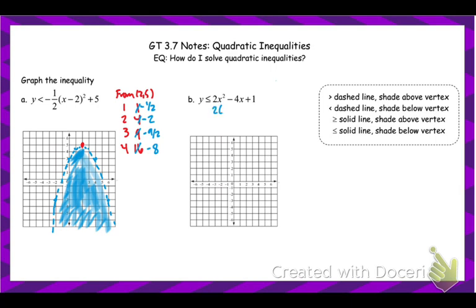I'd factor out that 2. The value that goes in the blank: negative 2 divided by 2, squared, is 1. But I'm not subtracting 1 — I have to do 2 times 1. So this becomes 2(x − 1)² − 1. My vertex here is (1, −1).